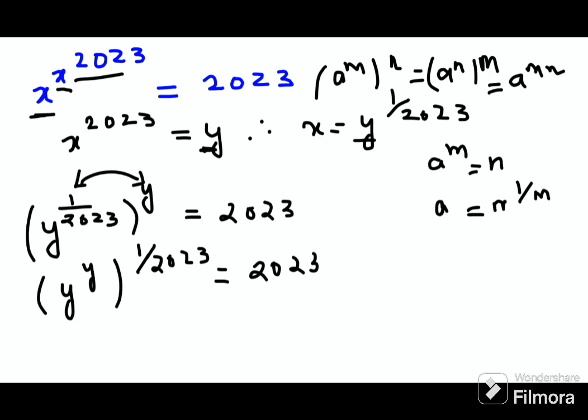Now taking the 2023 power on both sides, you multiply this by 2023, and this also becomes 2023. And if you see clearly, since this is getting multiplied, this will cancel. So we have y raised to y equals 2023.